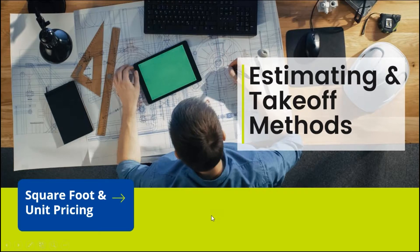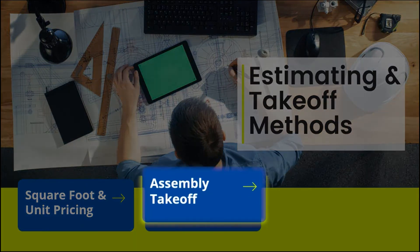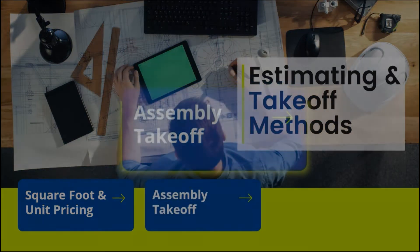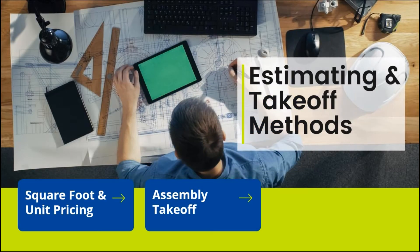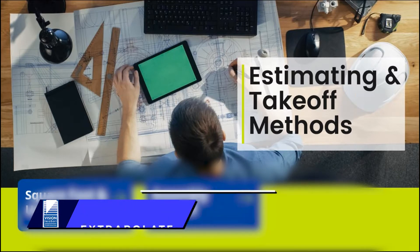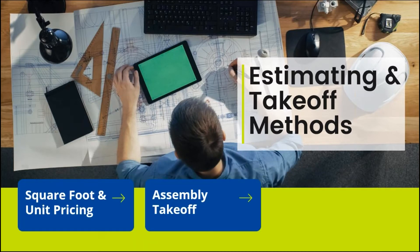What we like to talk about and use in the trade is what we call assembly takeoff. That simply means you count the symbols on the drawing — receptacles, switches, fixtures — measure all the wiring runs, and then extrapolate that into a list of material quantities which are assigned prices and labor units. Assembly takeoff is the most efficient, effective, and accurate way to do an estimate.